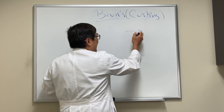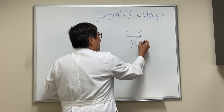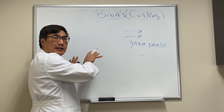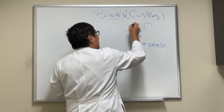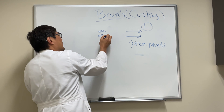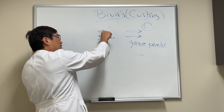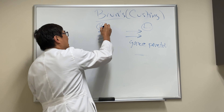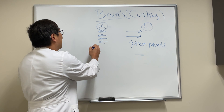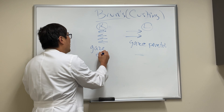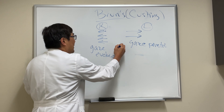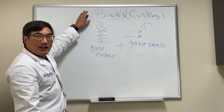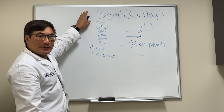So they've got a gaze-paretic nystagmus, which is bigger amplitude and slower frequency to the weak side, and then they've got a gaze-evoked nystagmus, which is smaller amplitude and higher frequency on gaze to the other direction. This combination of a gaze-evoked pattern plus a gaze-paretic pattern is morphologically what we would call the Bruns-Cushing nystagmus.